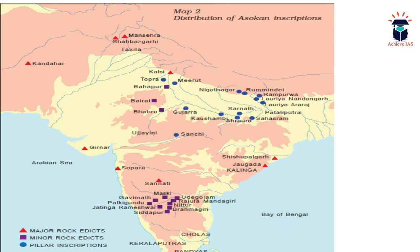The map shown here is from the NCERT. You can see major rock edicts marked in a triangle shape, including Kandahar, Manshara, Shahbazgarhi — these are in Pakistan — as well as Girnar, Sopara, Sanathi, Kalinga, Jagoda, Shishupalagad, and Kalsi. Minor rock edicts are mainly concentrated in Peninsular India — the Deccan — at sites including Udegolam, Rajula, Mandagiri, Nittur, Brahmagiri, Siddhapur, Jatinga Rameshwar, Palkigundu, Gavimath, and Maski, as well as Darat, Bhabru, and Bahapur.